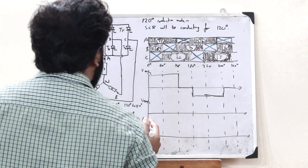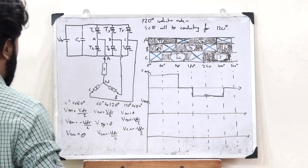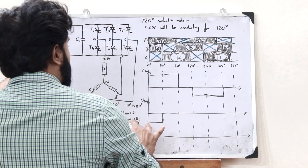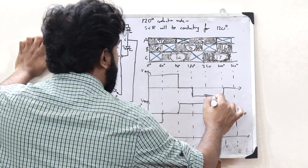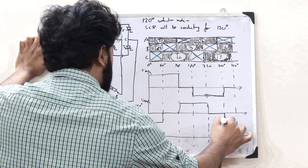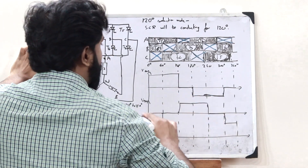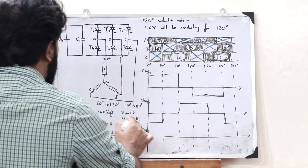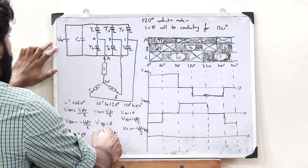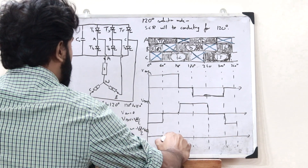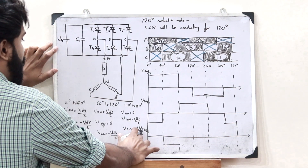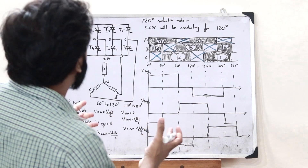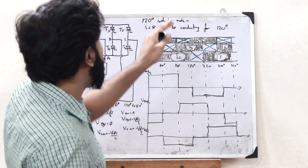For VBN, from 0 to 60 degrees it is −VDS/2, from 60 to 120 degrees it is 0, and from 120 to 180 degrees it is +VDS/2. It follows a basic repeating pattern — once you get the start, you can complete the pattern. For VCN, from 0 to 60 degrees it is 0, from 60 to 120 degrees it is −VDS/2, and from 120 to 180 degrees it is also −VDS/2. This is the phase waveform for a three-phase inverter in 120 degrees conduction mode.